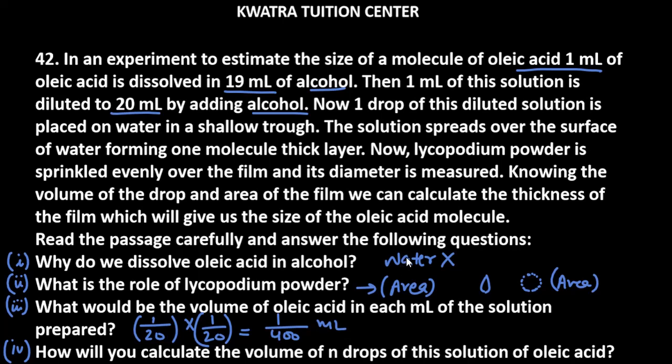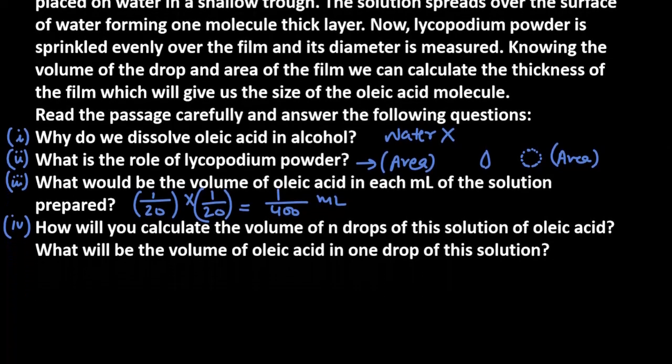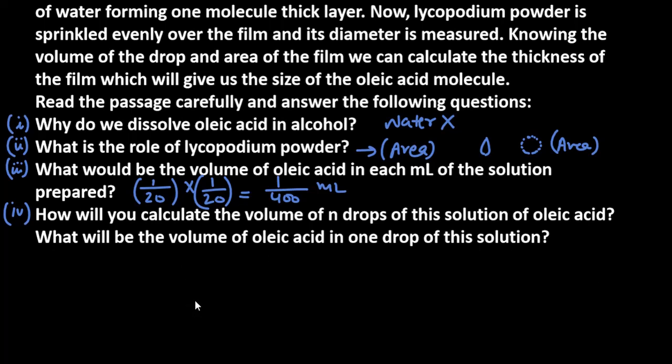Last one asked how will you calculate the volume of n drops of this solution of oleic acid? We know that the volume of n drops of solution is 1 ml divided by n, which gives us the volume in milliliters. So yes, this is the volume of oleic acid in n drops, and for one drop it's 1 ml divided by 400. So yes, this is the answer to this question. Thank you for watching, have a great day.